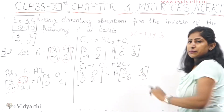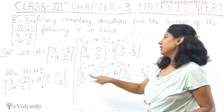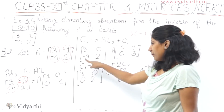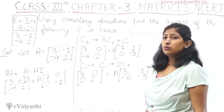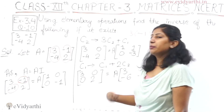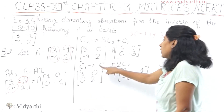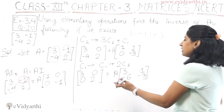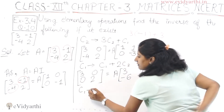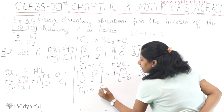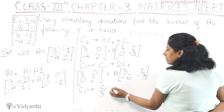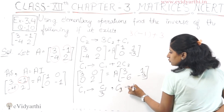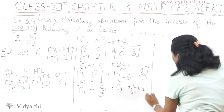Now we have 3 and 2 on the diagonal, but we want 1 on each. So I will divide C1 by 3 and C2 by 2. C1 goes to C1 divided by 3, giving 1 on top. And C2 goes to (1/2) times C2.